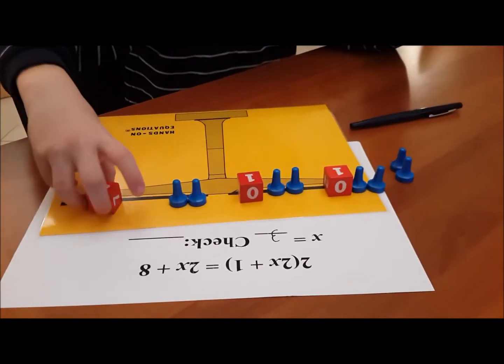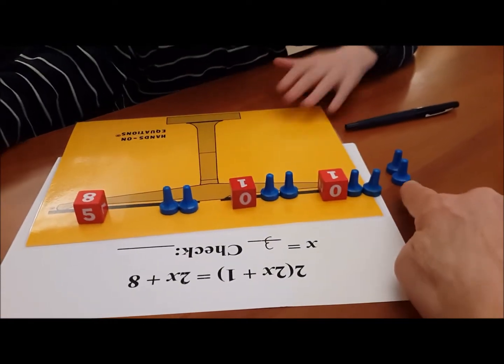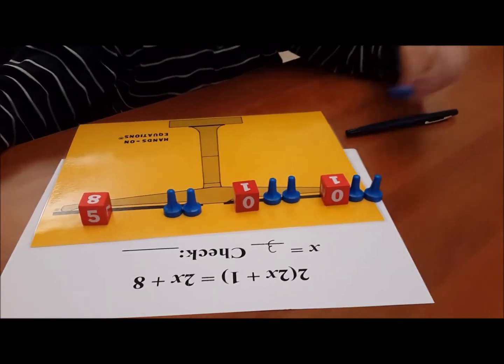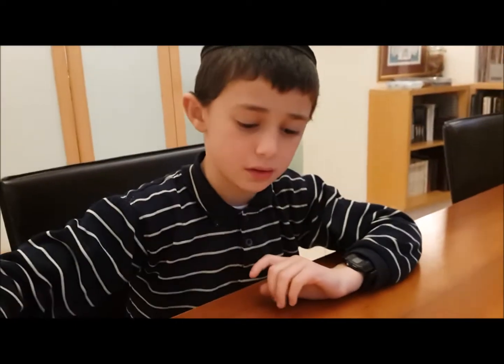Good. Okay, let's get rid of these pawns, okay, don't belong here. Okay good. Now we said x is three, let's see if three makes both sides work, okay.